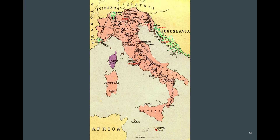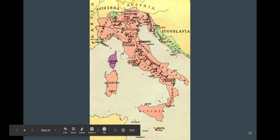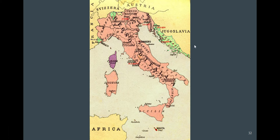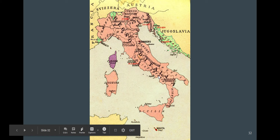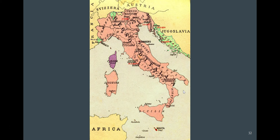Nationalism is about people of the same culture being in the same country. According to Italian nationalists, there are areas of Italy that are unredeemed — this is called the Irredentia. The Italian Irredentia becomes one of the causes of the First World War, and similarly the rise of fascism in the 1920s and 1930s in Italy is partly because these dotted green territories are still not part of Italy.